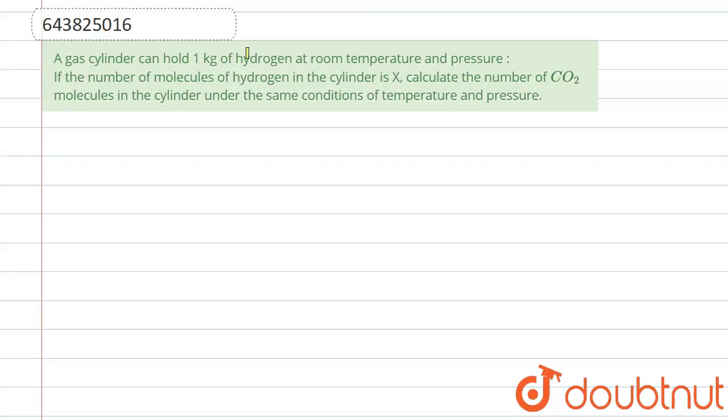A gas cylinder can hold 1 kg of hydrogen at room temperature and pressure. If the number of molecules of hydrogen in the cylinder is equal to x, calculate the number of CO2 molecules in the cylinder under the same conditions of temperature and pressure.